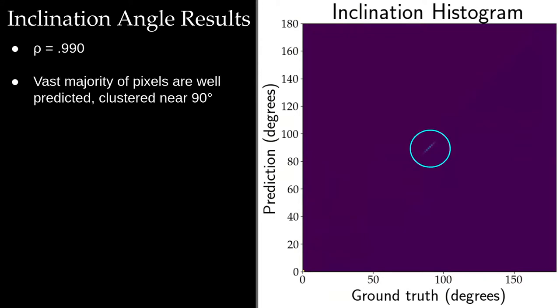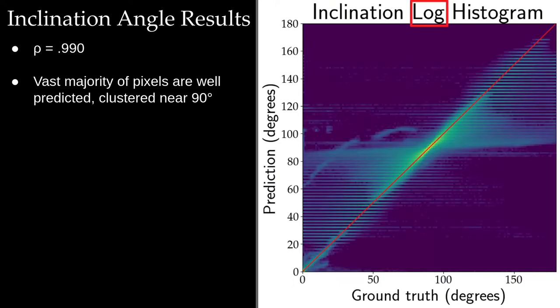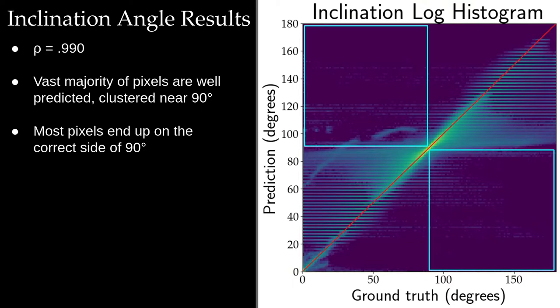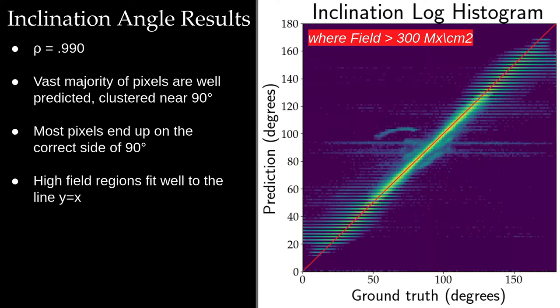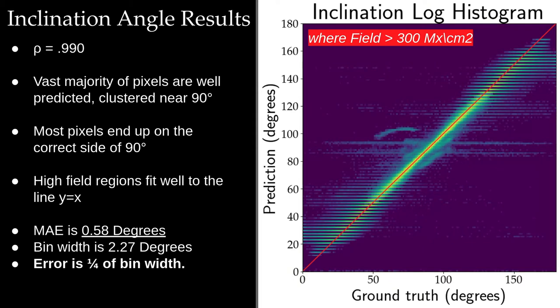We can look at the same outputs for inclination here. You can see that many of the pixels are well predicted near 90 degrees. When we do the log histogram, again, you can see that things generally follow this Y equals X line. But what actually is quite interesting is that although they do deviate in certain areas, they don't really deviate in the wrong direction. So a prediction that's on one side of 90 degrees also is typically related to a ground truth on the same side of 90 degrees. Then we can also look at this for high field areas, and you can see they fit well to line Y equals X. And overall the average error is 0.5 degrees. So basically the inclination angle ranges from zero to 180 degrees. And on average, our error is less than one degree in predicting this angle of the magnetic field vector.